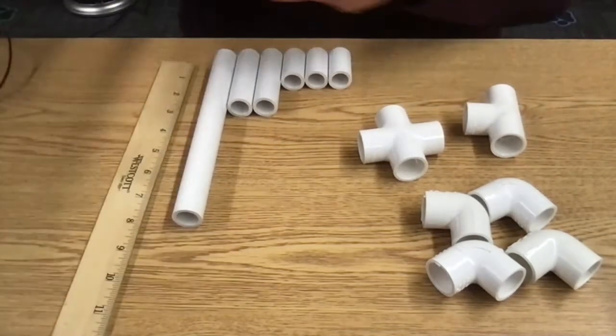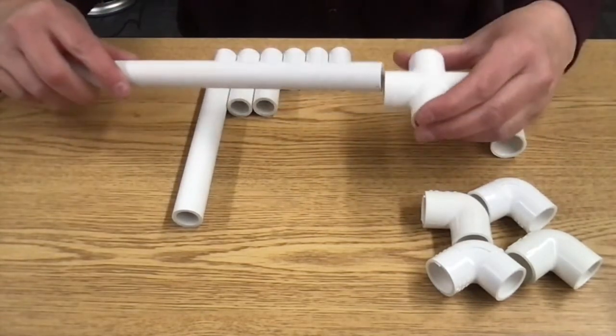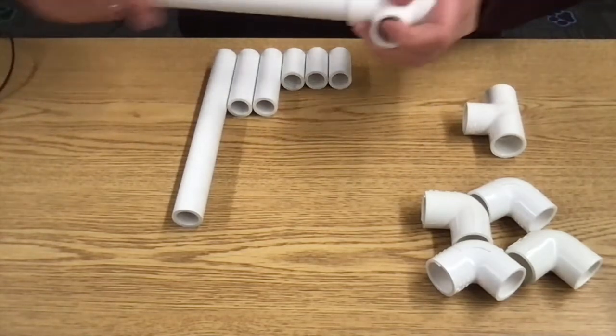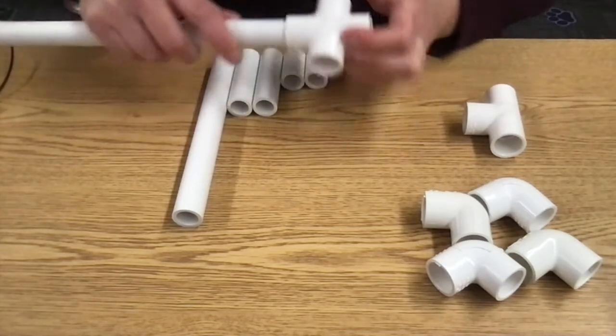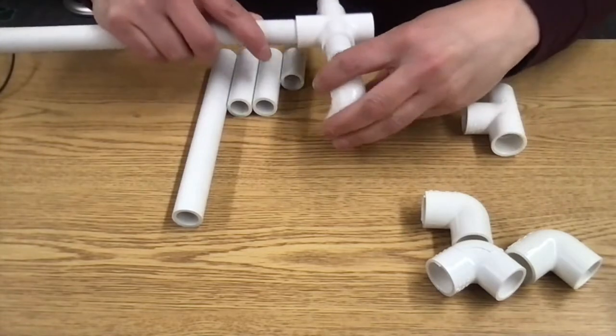We're going to start with the longest piece and attach to this the four-way. On the sides of that we're going to insert our one and a half inch pieces and our 90 degree elbows.